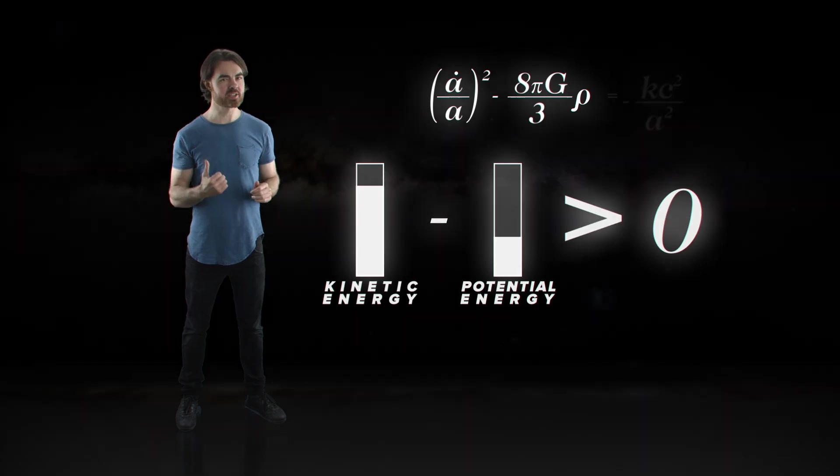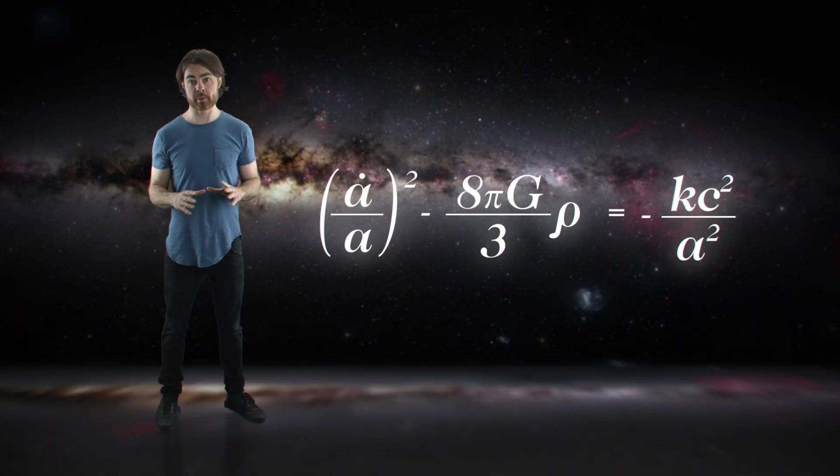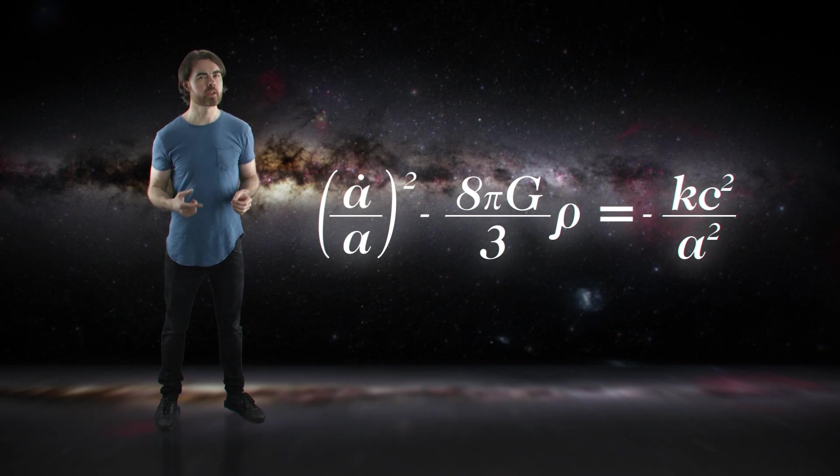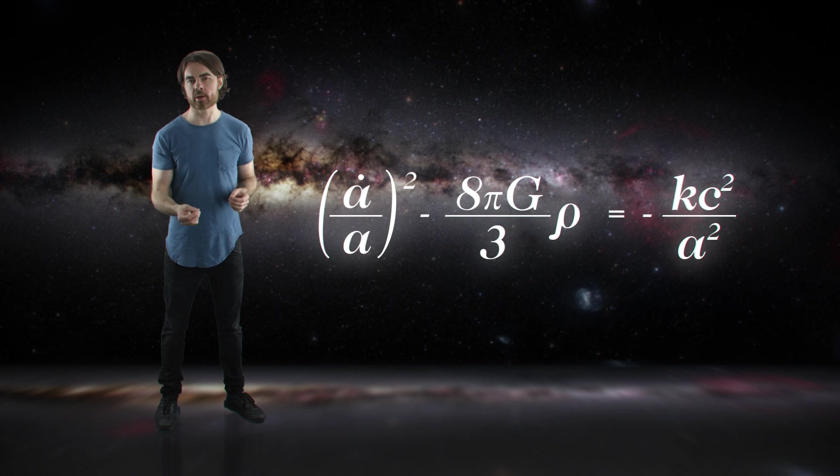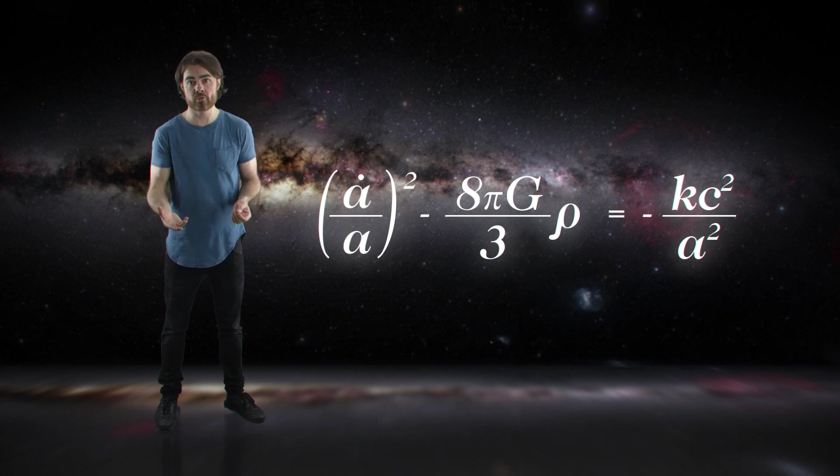But wait, we never got to the right side of the equation. We know that it should also be positive because, well, equals sign. But that right side describes something completely different to the left. It describes the shape of the universe, its spatial curvature. According to the first Friedman equation, the fate of the universe, as determined by its expansion and density, should be intrinsically tied to its shape. After all, matter tells spacetime how to curve. We'll see in the next episode that there's a surprising mismatch between the left and the right sides of the first Friedman equation that tells us that we're missing something crucial. That something is dark energy.